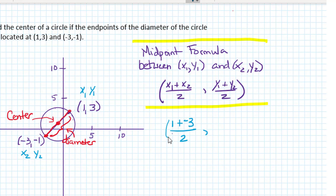We plug in the coordinate values into the formula and calculate. Simplifying, we have negative 2 over 2 and 2 over 2. Reducing to lowest terms, we have negative 1 comma 1.